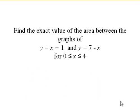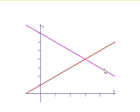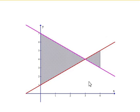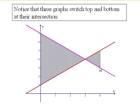One interesting twist. We want to find the exact area between these two graphs, x plus 1 and 7 minus x between 0 and 4. Here's those two graphs graphed together. If we shade in our area, notice that the function that's on top switches at their point of intersection.